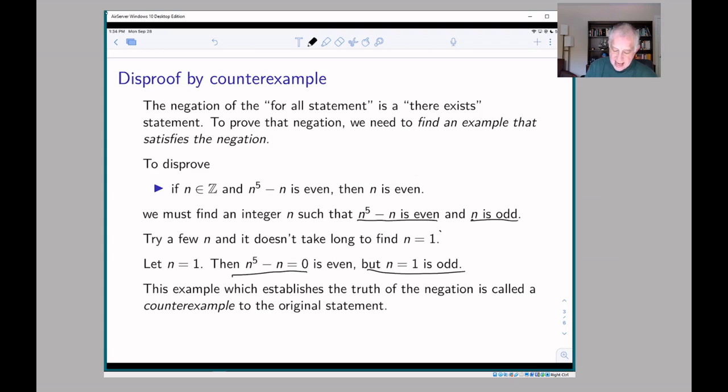And this n which proves the negation of the original statement is called a counterexample to the original statement. So n equals one is a counterexample to this statement. This is false and n equals one is a counterexample.